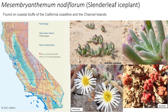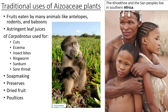As for Mesembryanthemum, there is an actual required species called Mesembryanthemum nodiflorum, or slender leaf ice plant. This plant grows on coastal bluffs of the California coastline and the Channel Islands, where it was initially introduced for ornamental purposes. While not as mat-forming as Carpobrotus, this species can form small clumps with slightly narrow succulent leaves and very beautiful showy flowers.